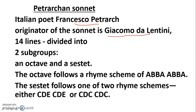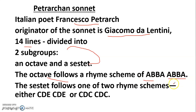The Petrarchan sonnet has 14 lines divided into two subgroups: an octave and a sestet. The octave follows the rhyme scheme ABBAABBA, and the sestet follows one of two rhyme schemes — either CDECDE, which is very common, or CDCCDC.